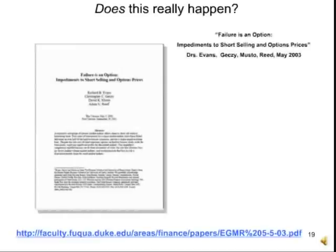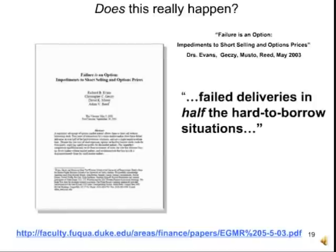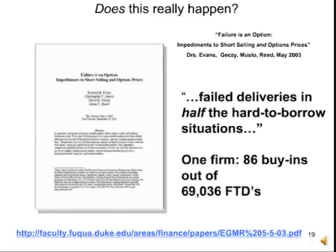That question was taken up by four economists from Wharton and the University of North Carolina. They wrote a cleverly titled paper, 'Failure is an Option.' They discovered that in certain stocks, half the time this loophole is being used, it's being gamed strategically. Incidentally, the system has a safeguard called a buy-in. These economists looked at two years of trading data and discovered that in 69,000 cases of FTDs, the safeguard kicked in only 86 times — that's 0.1% — meaning in the other 99.9% of cases, this safeguard did not kick in. So the answer is yes, this does really happen extensively.